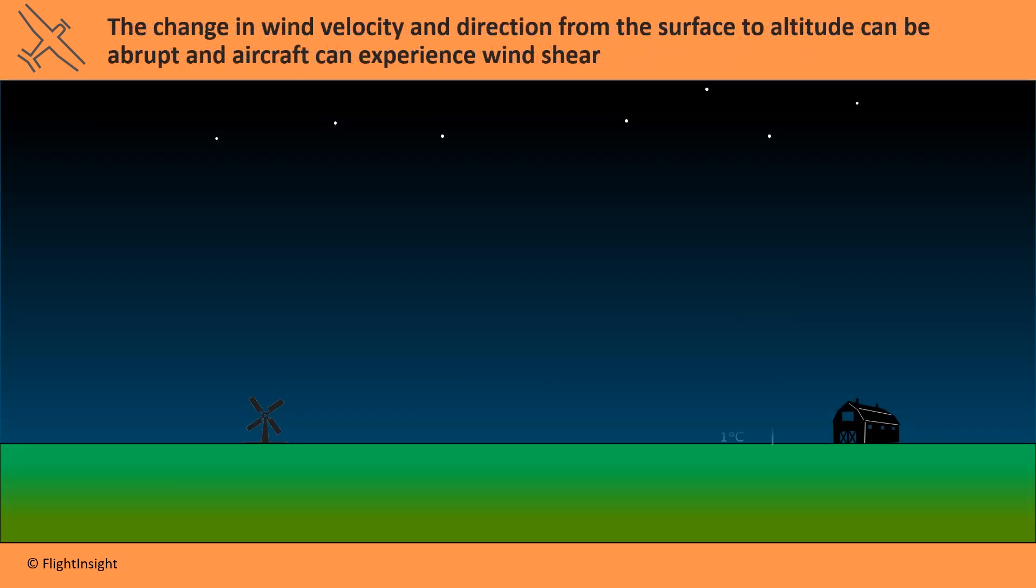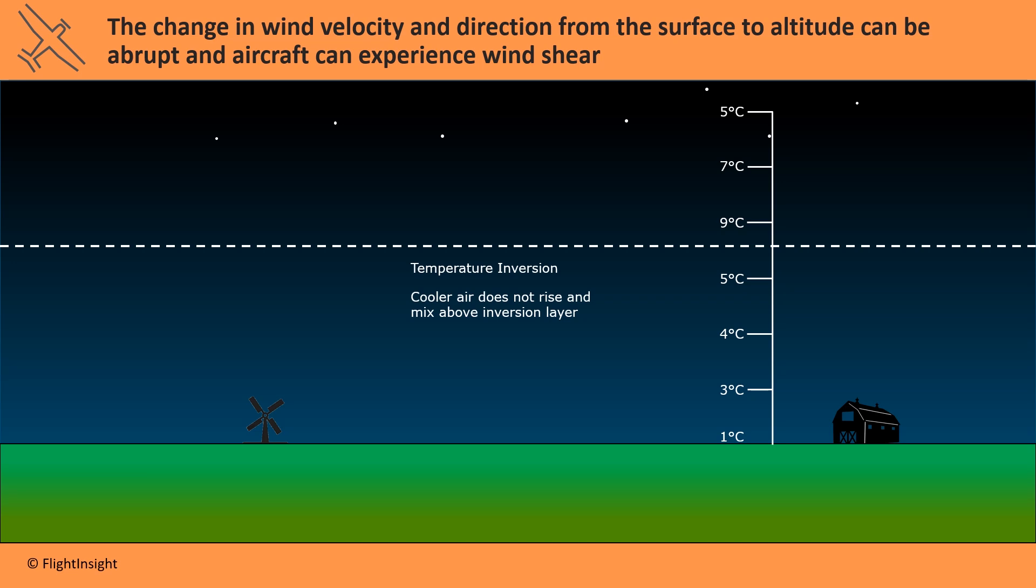This could happen in a condition such as a temperature inversion where cooler air is trapped below warmer air, so the winds at the surface don't mix with the winds aloft, creating a strong boundary layer with very different wind patterns on either side. This is common after sunset on a clear windy day.